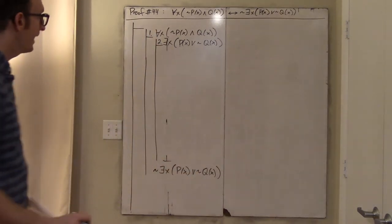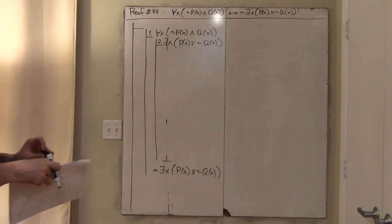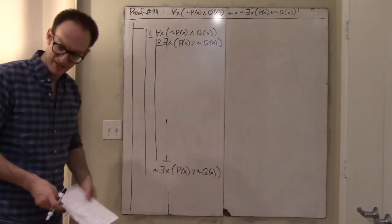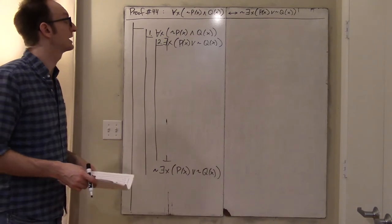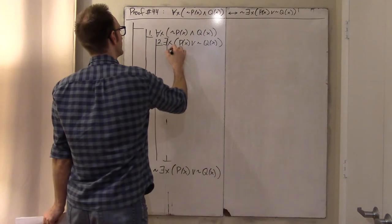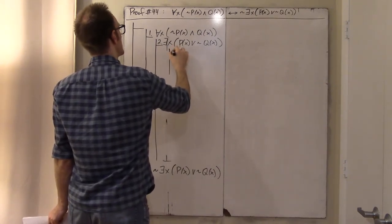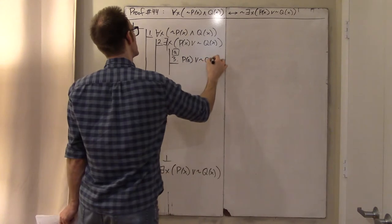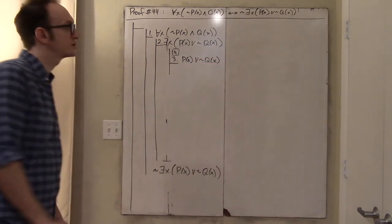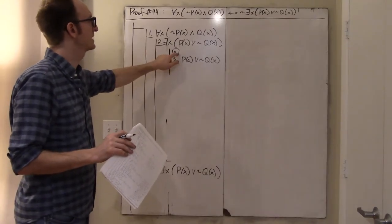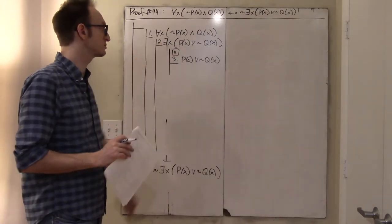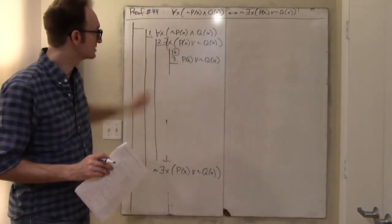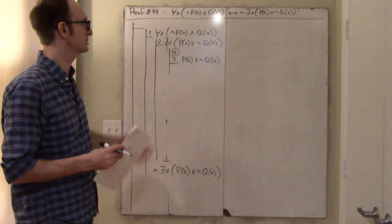In line two, I will assume that there is an x such that p of x or not q of x, and I will get a bottom and then be done. Line two tells me there is some certain person, so to make any real progress I need to give that person a name. I'll begin a new sub-proof and call this person A — A is the person that I know exists by virtue of line two.